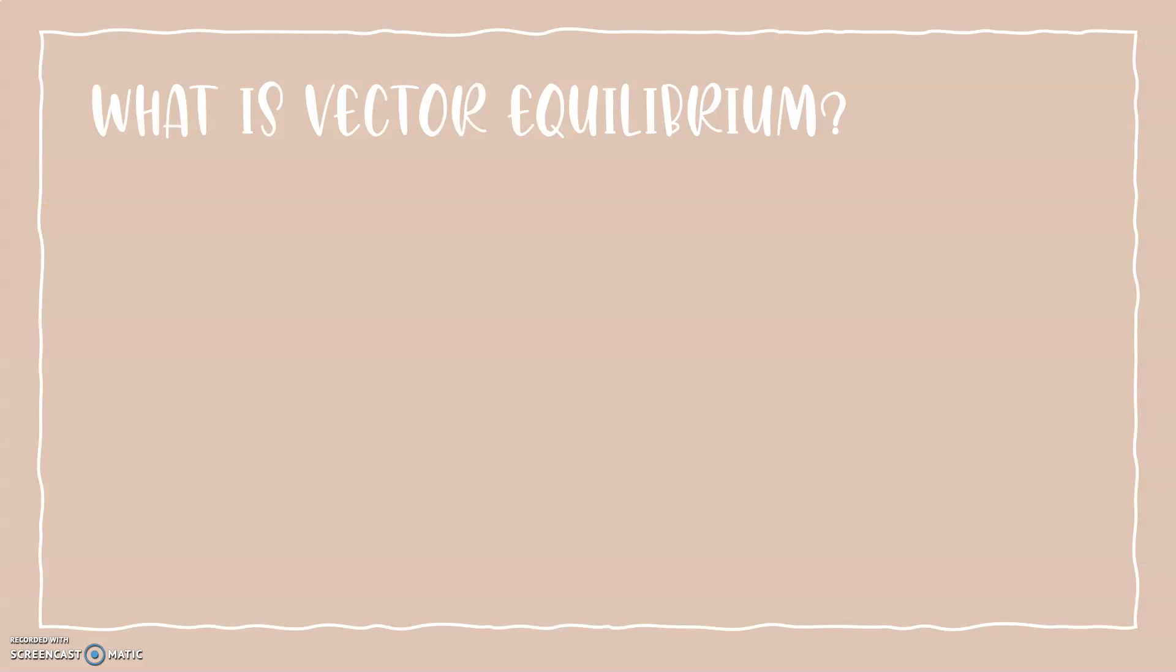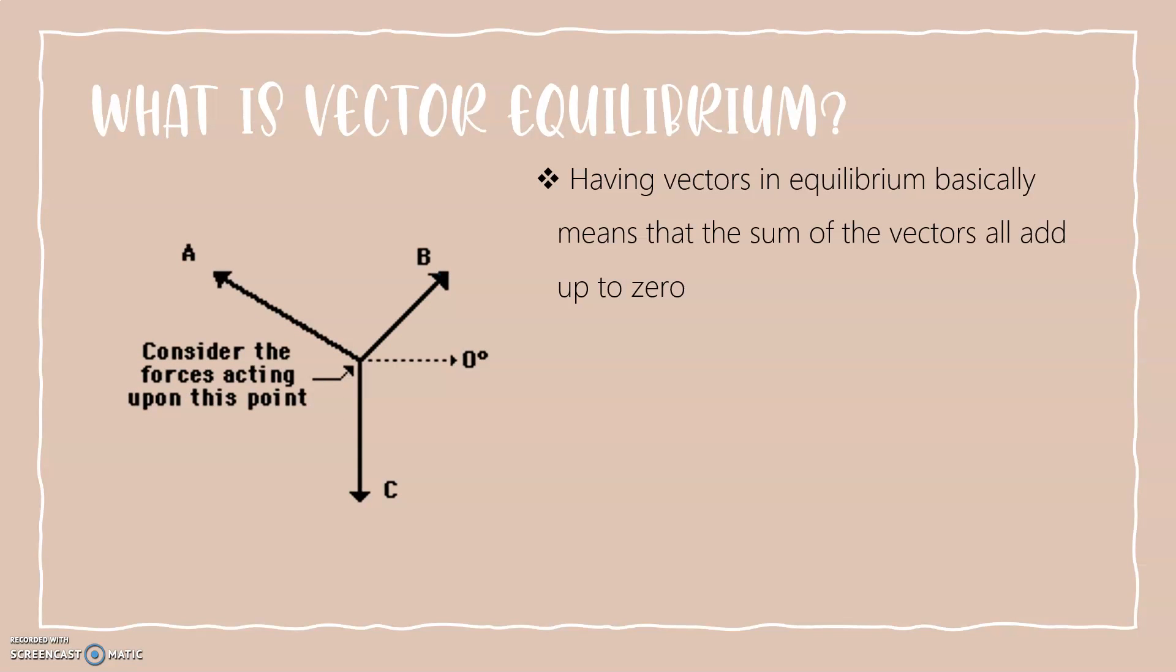So what is vector equilibrium? Vector equilibrium is basically when the sum of all the vectors add up to zero.